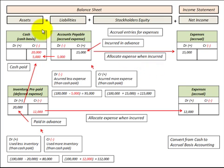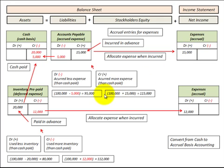Now let's look at our expenses, starting with accounts payable, which is a liability on the balance sheet. This is where we incur an expense in advance of making any payments. Say we incurred an expense of $15,000 — we credit accounts payable for $15,000 and debit expenses on the income statement for $15,000. We accrued more expense than the cash paid; we didn't pay any cash. So from a $100,000 cash basis, we'd add this extra $15,000, giving an accrual basis of $115,000.